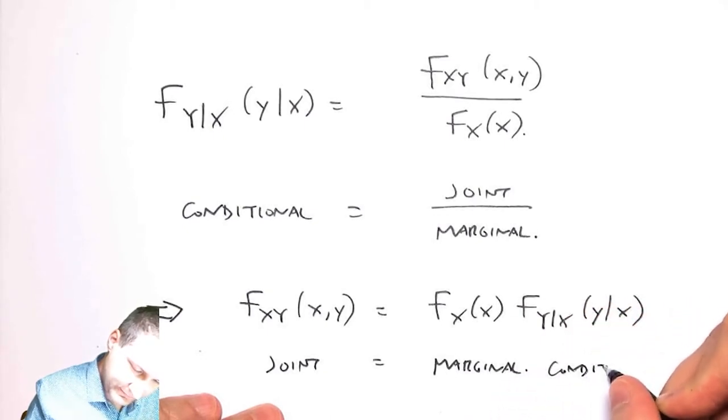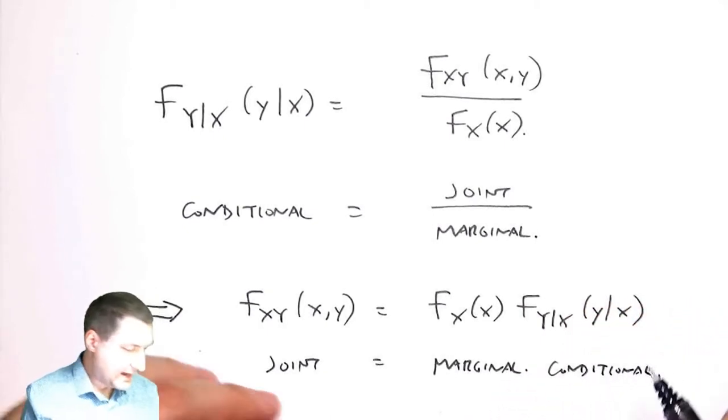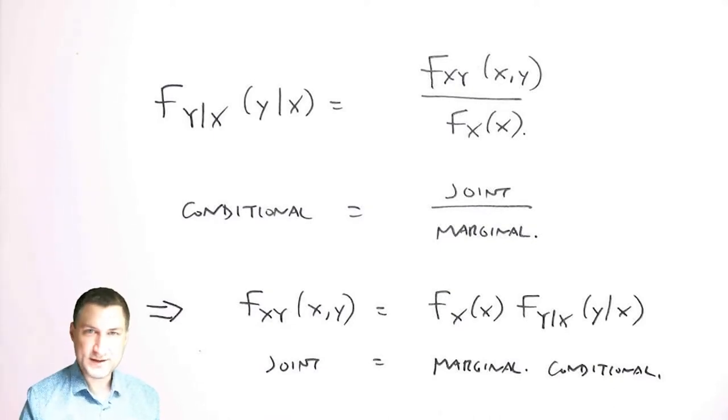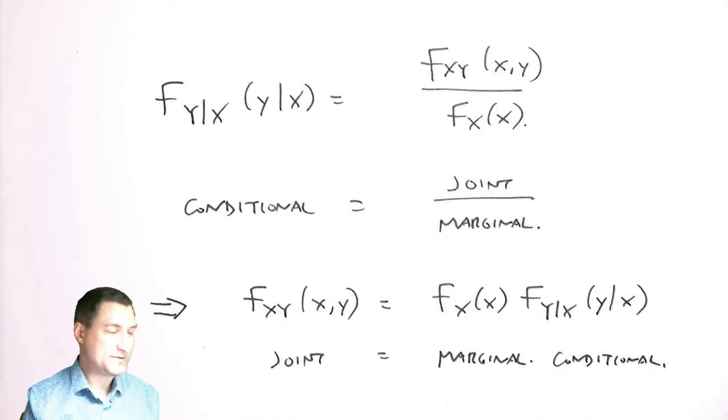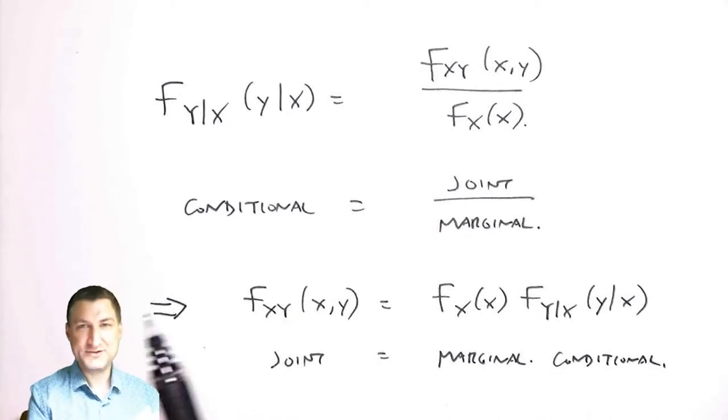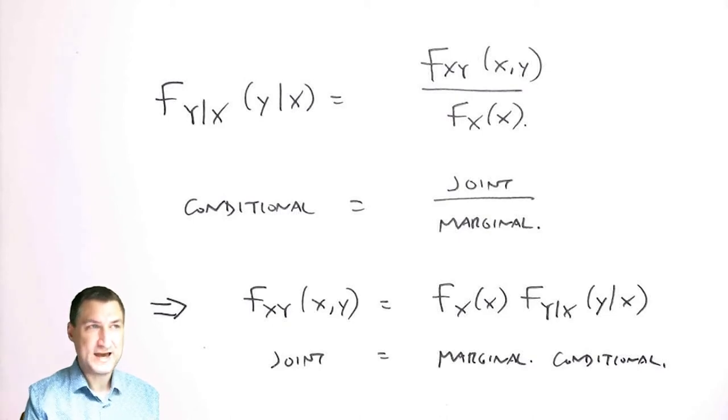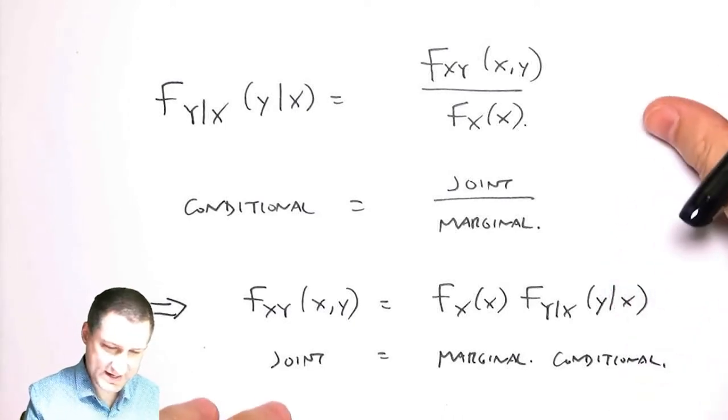This turns out to be a very useful way to write things because sometimes I don't know the joint and I want to compute it, but I'm given the conditional. That happens a lot where I say, under these circumstances the PDF is this, and I know what the probability that circumstance is—now can you compute for me the overall joint thing?